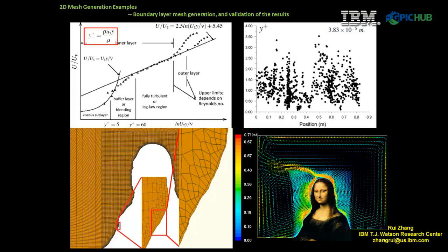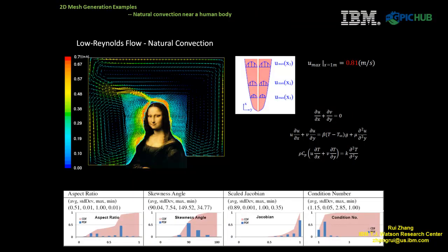The maximum velocity of the buoyancy flow is about 0.7 meters per second above the human height. Analytical solution of buoyancy flow near a flat plate was also developed to validate the CFD simulation. The analytical model shows that the maximum velocity would be 0.8 meters per second, which is very close to the CFD simulation result of 0.7 meters per second, and which helps to validate the CFD simulation. The mesh also shows good quality in terms of aspect ratio, skewness angle, scaled Jacobian, and condition numbers.